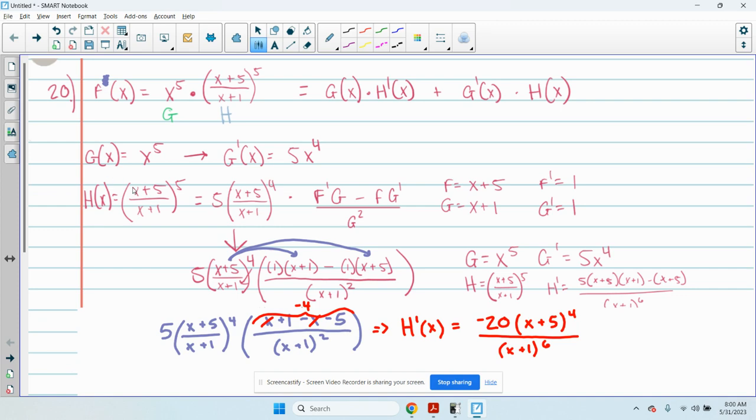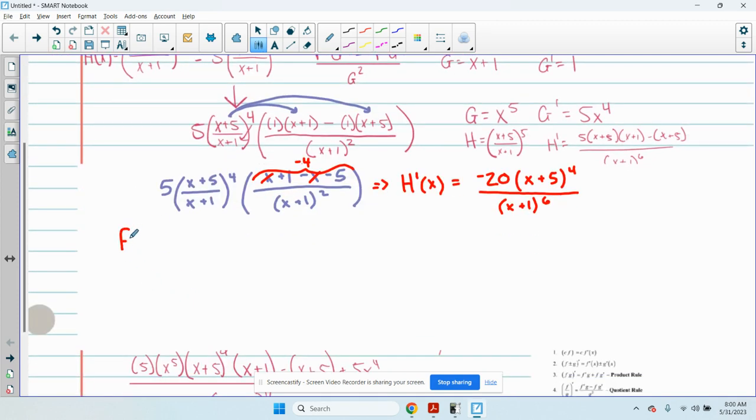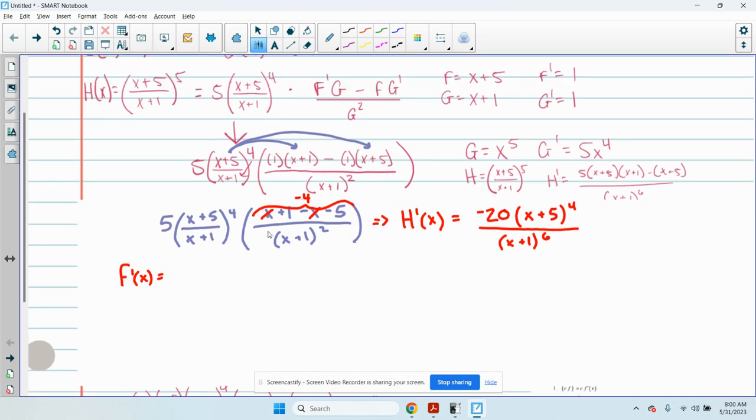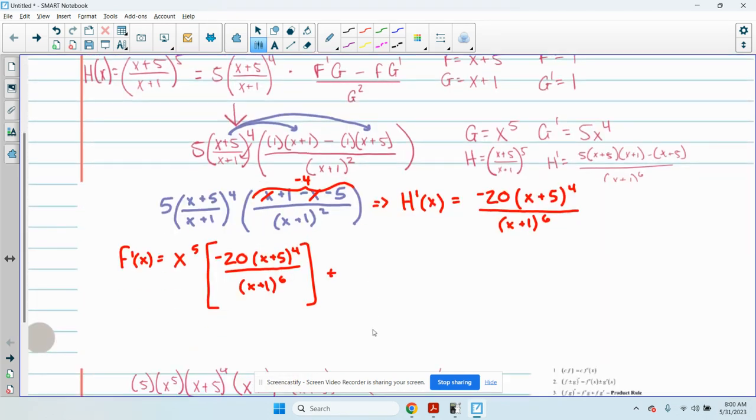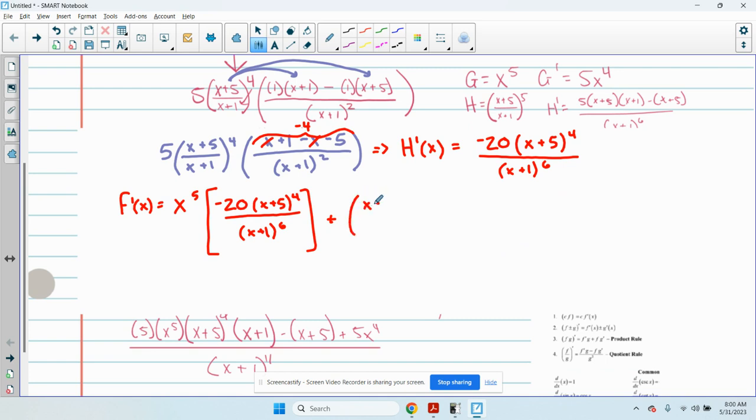So the final derivative is going to be f prime of x equals first, x to the fifth times the derivative of the second, which is this thing, plus the second, which is that thing, times the derivative of the first.